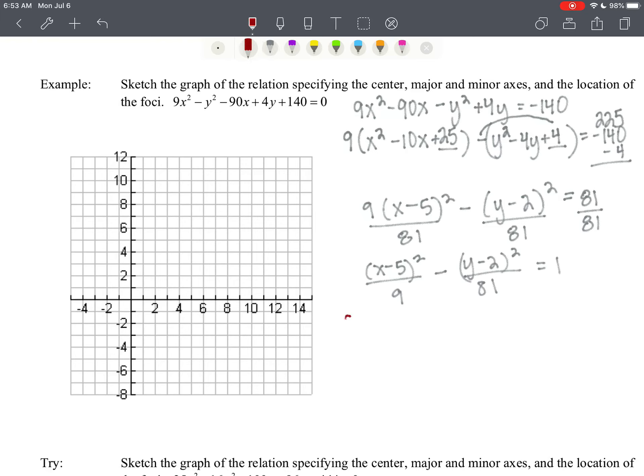So our center is going to be at 5, 2. This is going to open horizontally, so it's going to open away from the y-axis, and I've got an x-radius equals 3 and a y-radius equals 9.